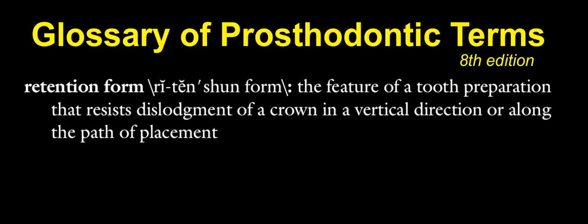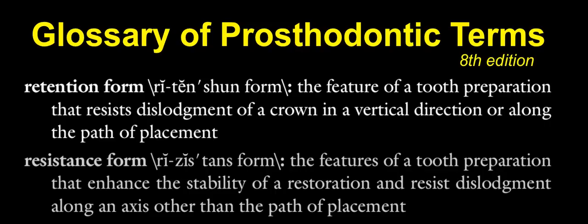Looking at the basic principles of fixed prosthodontics — fixed prosthodontics 101 — the most important part is preparation. We talk about retention form: the feature of the tooth preparation that resists dislodgement of a crown in a vertical direction or along the path of placement. Resistance form is the feature of the tooth preparation that provides stability and resists dislodgement along an axis other than the path of placement. Both are extremely important.